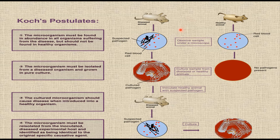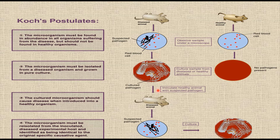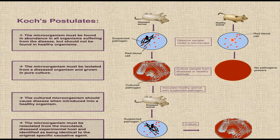When a mouse died, he took its blood and injected it into a healthy mouse, which again died. He repeated this experiment 20 times and each time the healthy mouse died. Examination of healthy mice showed no bacteria present, but when he examined the dead mice, he found certain rod-shaped bacilli in their blood.